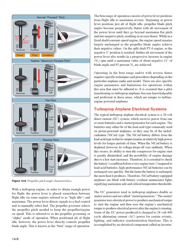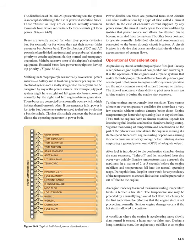The DC generators used in turboprop airplanes double as starter motors, called starter/generators. The starter/generator uses electrical power to produce mechanical torque to start the engine, then uses the engine's mechanical torque to produce electrical power after the engine is running. Some DC power produced is changed to 28-volt, 400-cycle AC power for certain avionic, lighting, and indicator synchronization functions via an inverter. The distribution of DC and AC power throughout the system is accomplished through power distribution buses — common terminals from which individual electrical circuits get their power. Buses are usually named for what they power (e.g., avionics bus) or for where they get their power (e.g., right generator bus, battery bus).